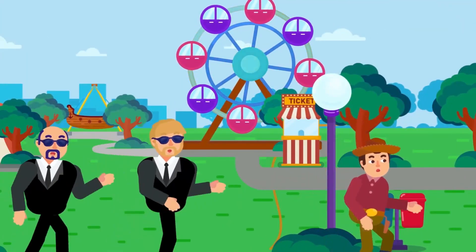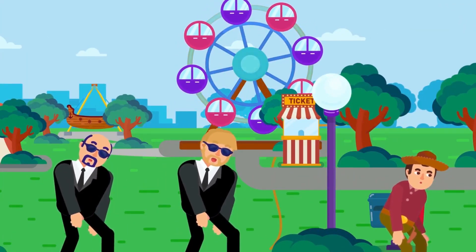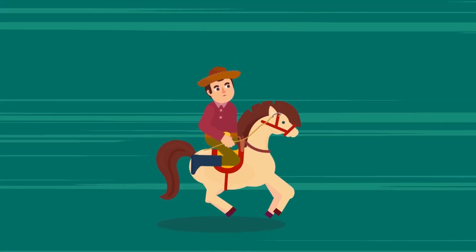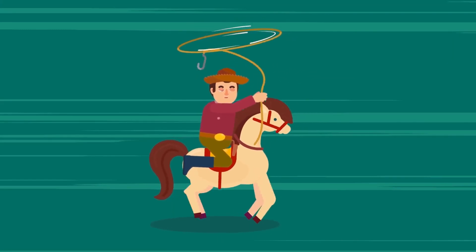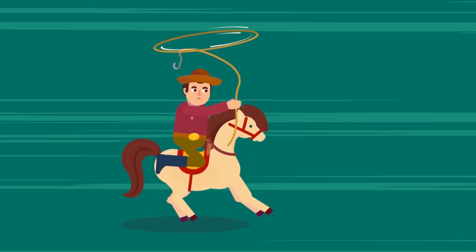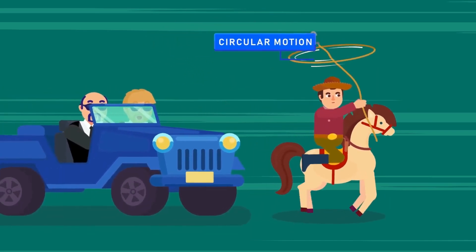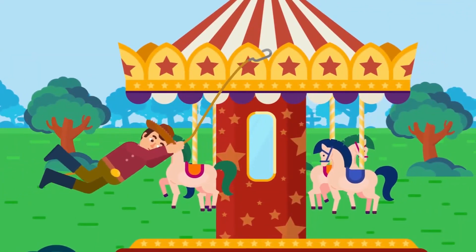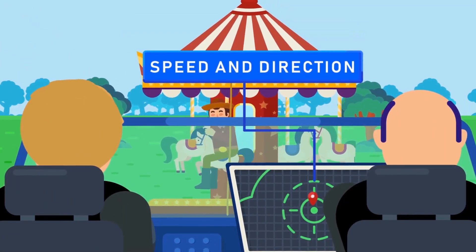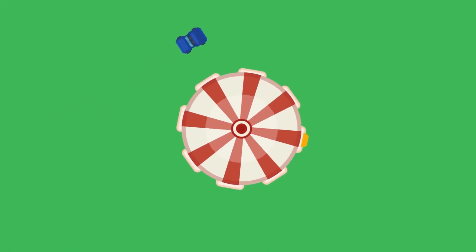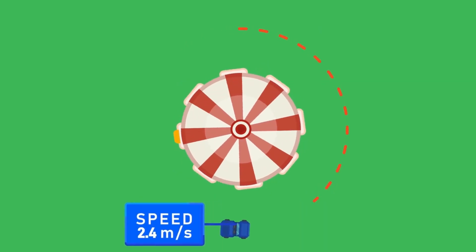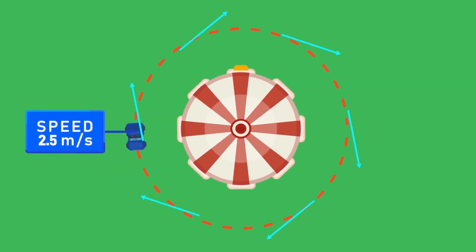An object is in circular motion when it travels in a circular path. Imagine a cowboy ties a hook of uniform mass density at the end of a rope and keeps the other end in his hand. The rotation he makes with the hook while holding the rope makes the hook move in a circular path — this is called circular motion. One important aspect is velocity. In uniform circular motion, the speed is consistent while the direction changes. In non-uniform circular motion, both speed and direction change.